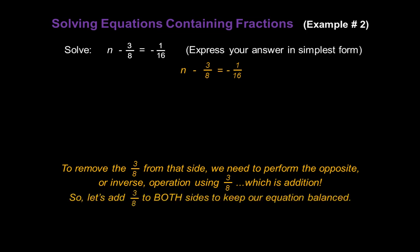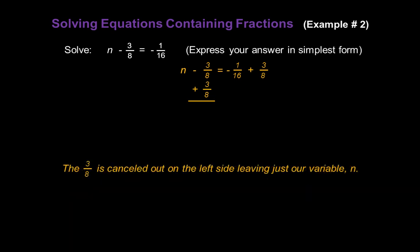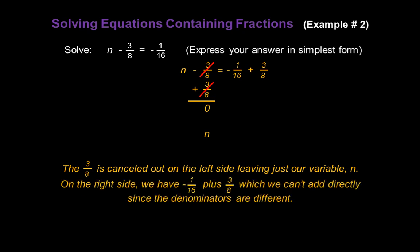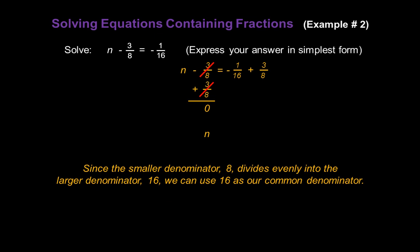This time it's going to be addition. So let's add three-eighths to both sides to keep our equation balanced — plus three-eighths on the left and plus three-eighths on the right. Now three-eighths is canceled out on the left side, leaving just our variable n isolated on that side. On the right side we have negative one-sixteenth plus three-eighths, which we can't add directly since the denominators are different. We need to find a common denominator for sixteen and eight. Since eight divides evenly into sixteen, we can use sixteen as our common denominator, and the first fraction stays the same.